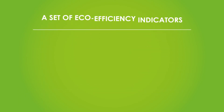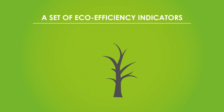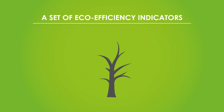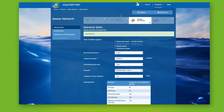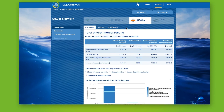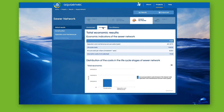With all this data, the Aquaenbeck tool provides a set of environmental, economic and eco-efficiency indicators. These results are shown graphically in order to analyse trends in the three indicator categories.